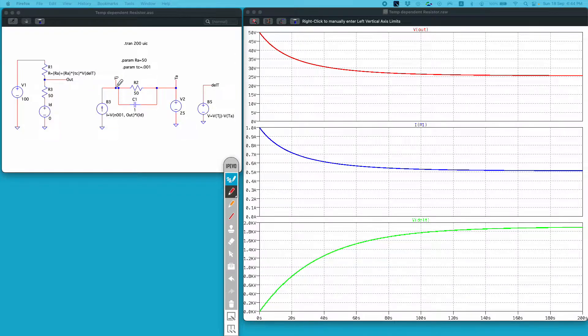Now input of this thermal network or thermal circuit is the power loss in this resistor. And I am using this current source to calculate the power loss in this R1. Essentially I am taking the potential difference between this node and this node and multiplying it with the current flowing through the R1.